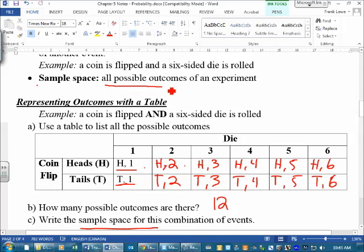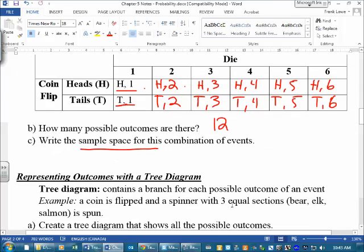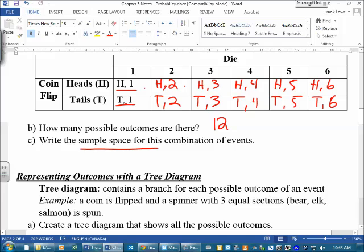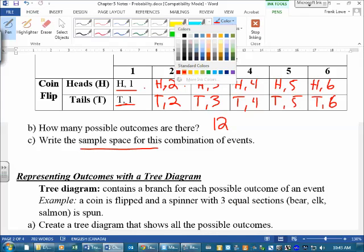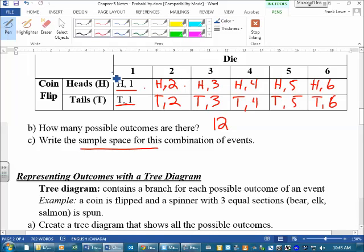So these are all the possible outcomes of an experiment. Let me just change my pen. All of these are my possible outcomes.